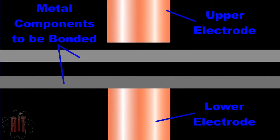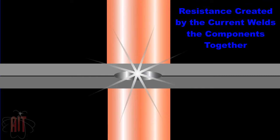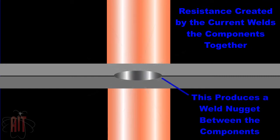Weld current is passed between the upper and lower electrodes. The electrical current produces heat at the point of highest electrical resistance. Heat momentarily liquefies the metals and produces an intermetallic bond called a weld nugget.